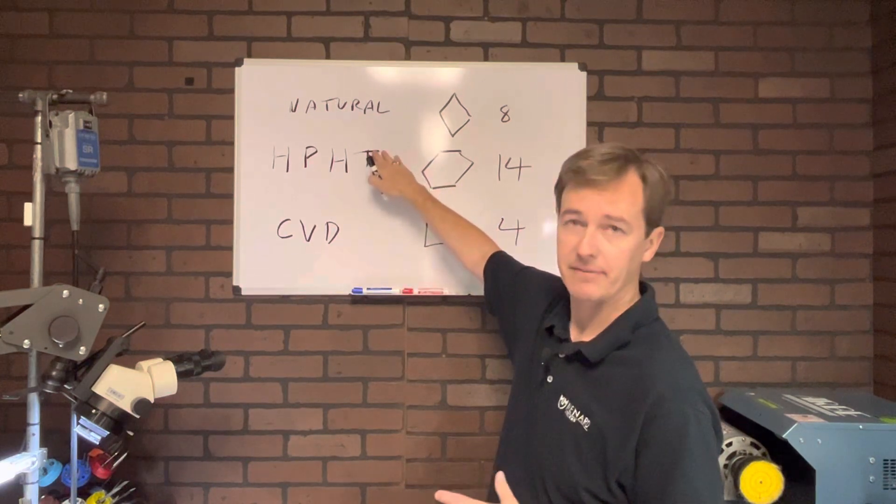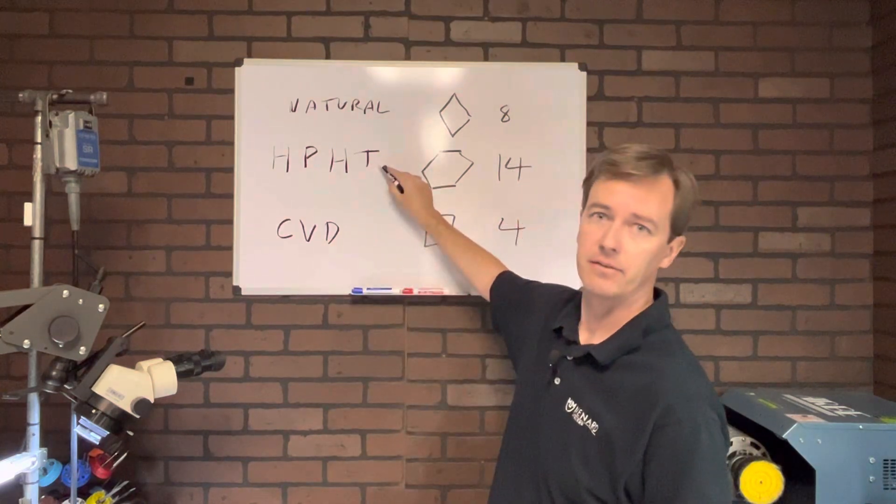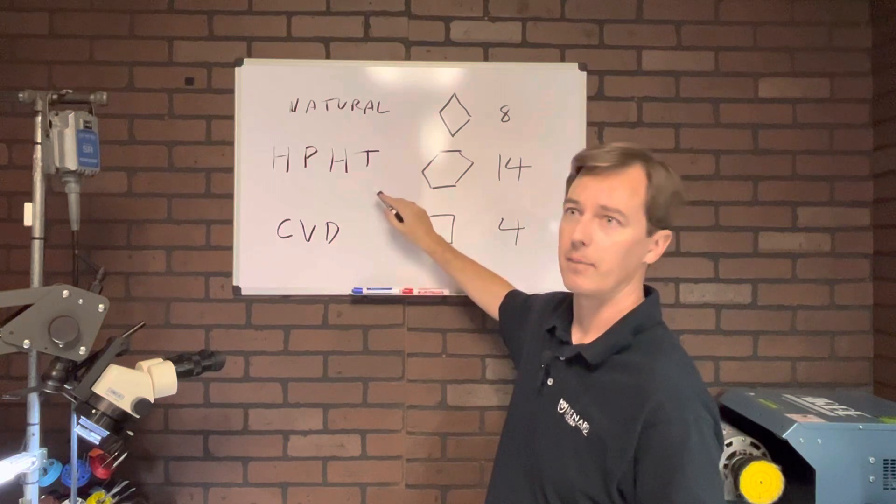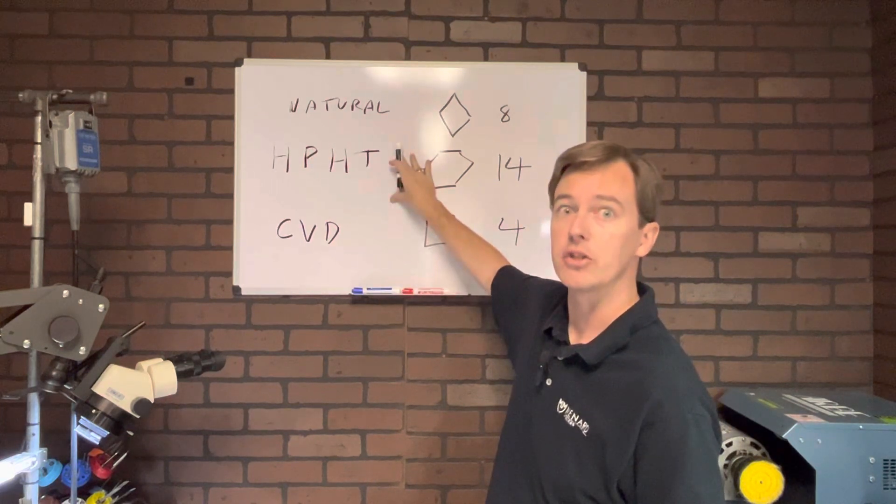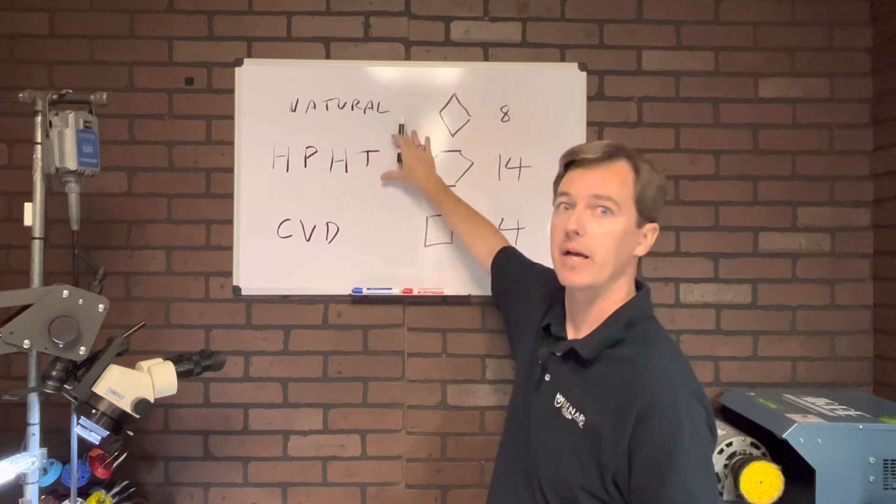They will probably have less because there's not all the stuff coming through from the earth, but these will still have SI2 and even I, you know, different inclusions inside these stones. And they are graded the same way as a natural.